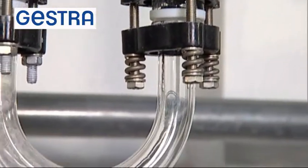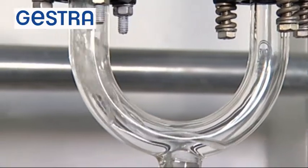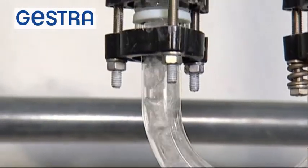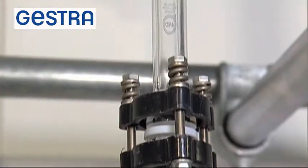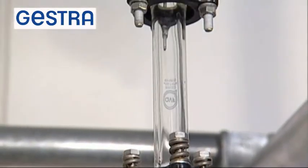For this reason, Gestra recommends the use of the condensate dampening pot type ED for condensate lines where the pipework changes from the horizontal to the vertical orientation. Thank you for watching!